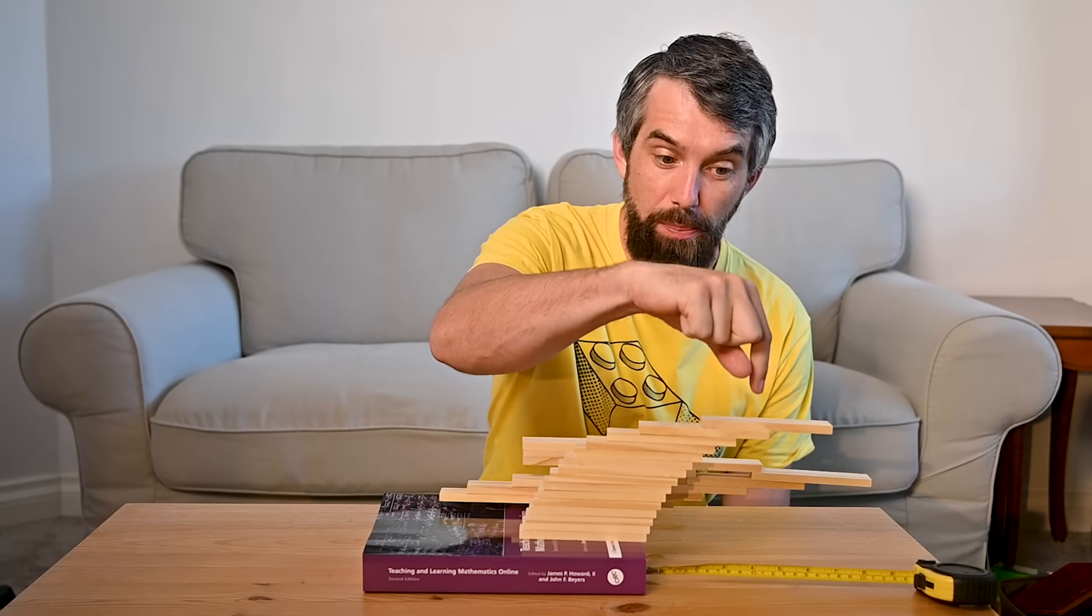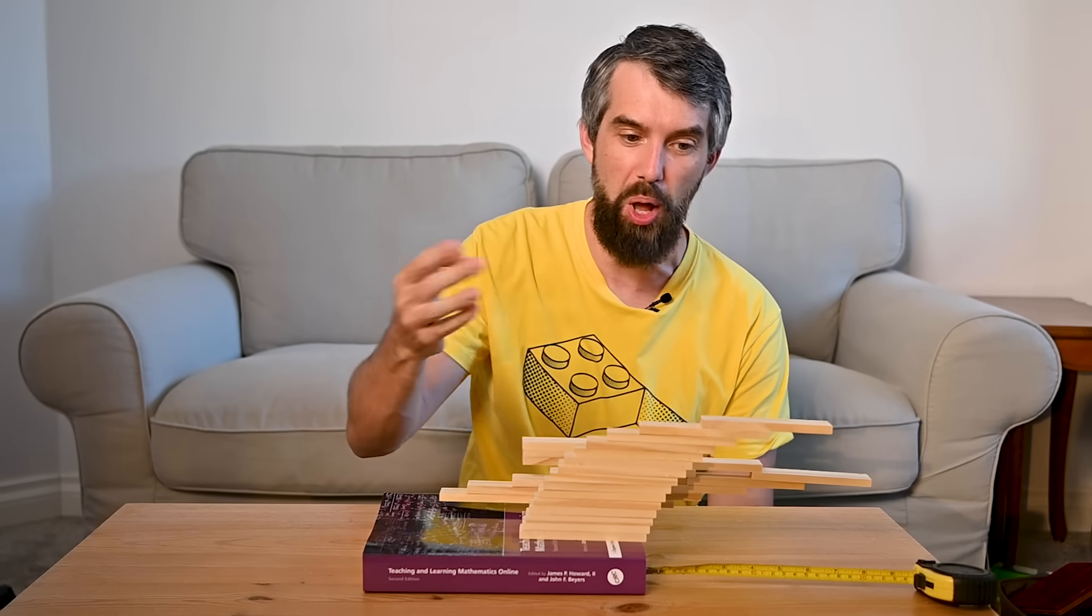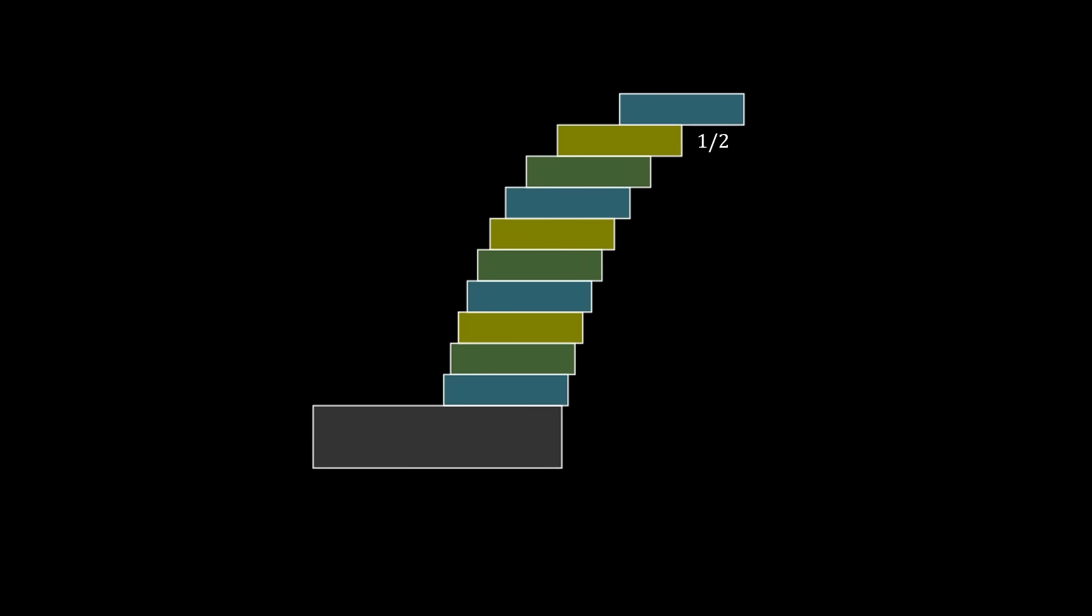And this has a cool pattern to it. The top block overhangs by half of a block. The second block overhangs by a quarter of a block. Then a sixth, an eighth, a tenth, a twelfth, a fourteenth, and so on.